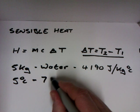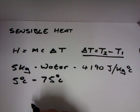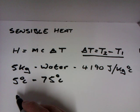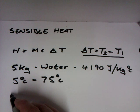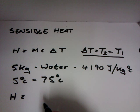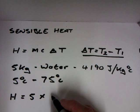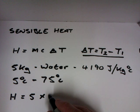So what will the equation look like? Well, what we have is first of all the mass. So H will equal the mass which is 5 kilograms, multiplied by the heat capacity of 4190 joules per kilogram, multiplied by the temperature difference.